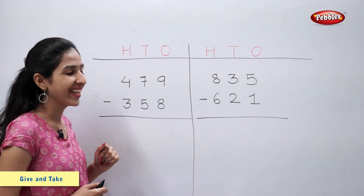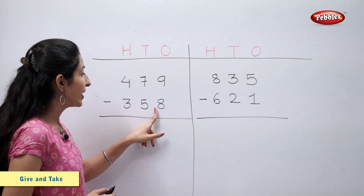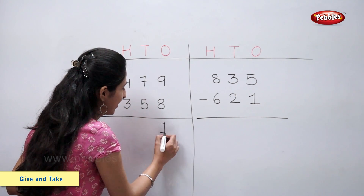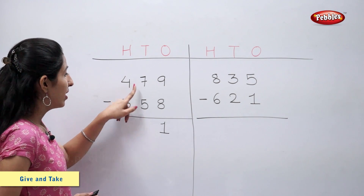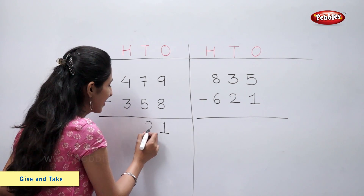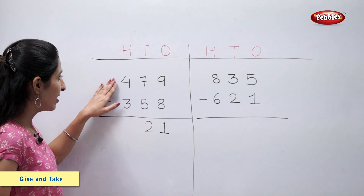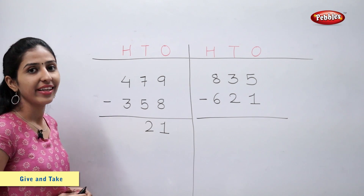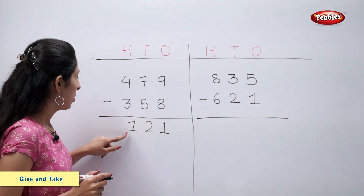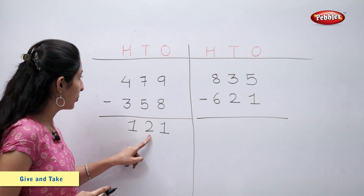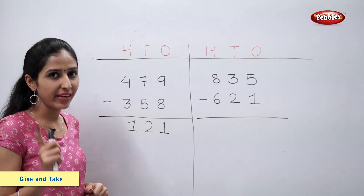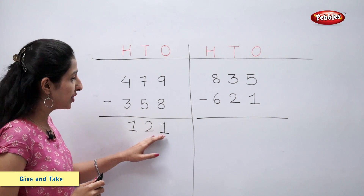Let's subtract ones first. Nine minus eight is equal to one. Seven minus five is equal to two. Four minus three is equal to one. So now we have one hundred, two tens, one one. So the number is one hundred and twenty-one.